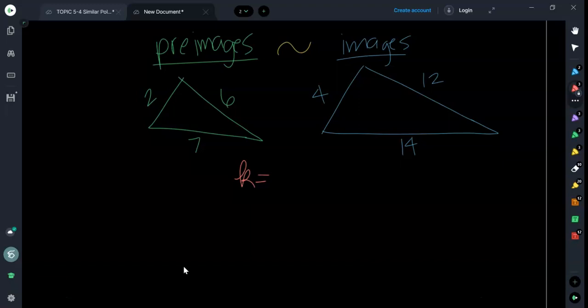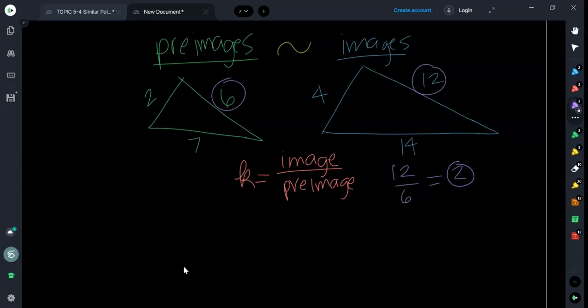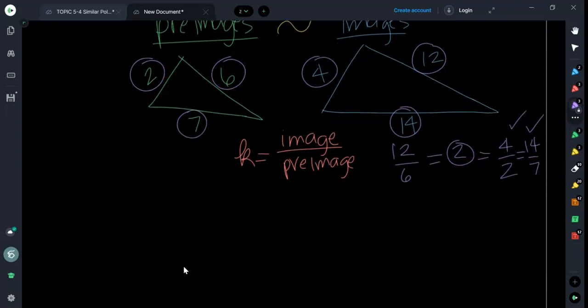Let's say this is 2, and let's say that's 6, and let's say that's 7. And let's say that this is my image, and this is 12, and this is 14, and this is 4. Then I'm going to ask you for the scale factor K. Now remember, the scale factor is the image divided by the pre-image. That's how you find the scale factor. Let's start matching up some sides. 12 goes with 6, so what is 12 divided by 6? It is 2. That means your scale factor is 2.